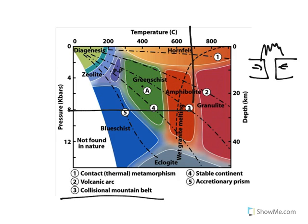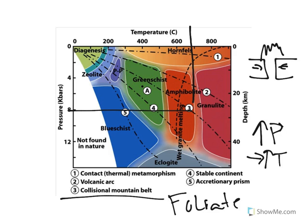So in something like a collisional mountain belt, really, we're going to have relatively high pressure and probably medium to high temperature. So in our collisional mountain belts, this is where I expect to see foliated rocks. When I start to have this pressure driven system, that's when I'm going to see foliation definitely occur.